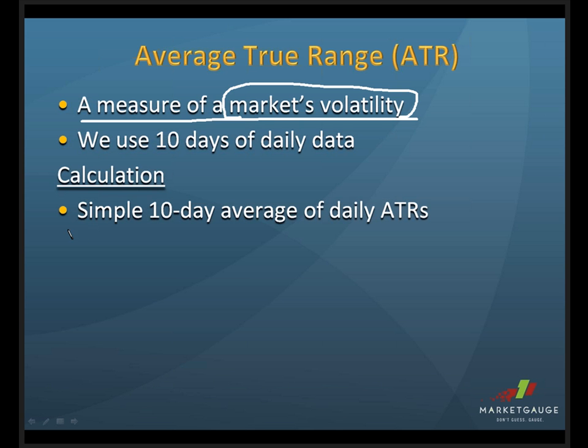One of the common questions we get is: how many days do you look at to determine the market's volatility? We use the 10-day average of the daily average true range. 10 days, 15 days, 20 days — just be consistent. We use 10 days. We feel it's a good measure for stocks that could get incredibly volatile because of news and then settle down. At the same time, you don't want one big day to skew your volatility measure.